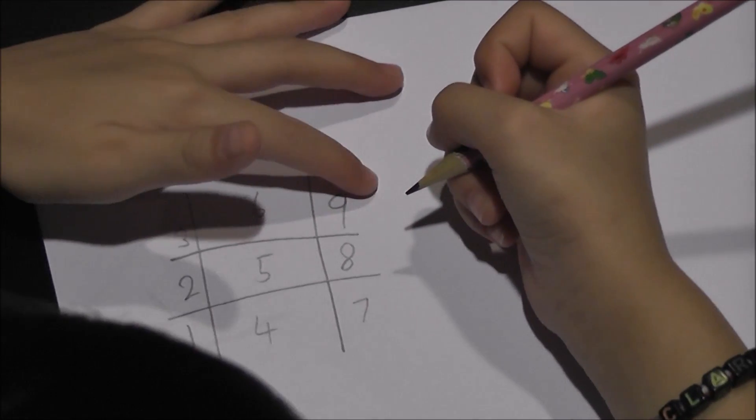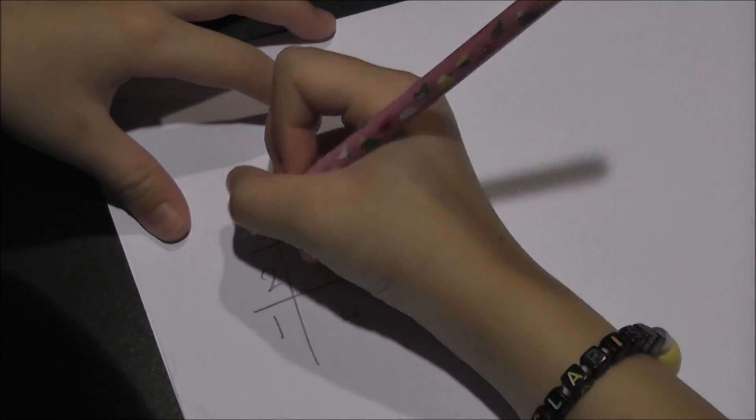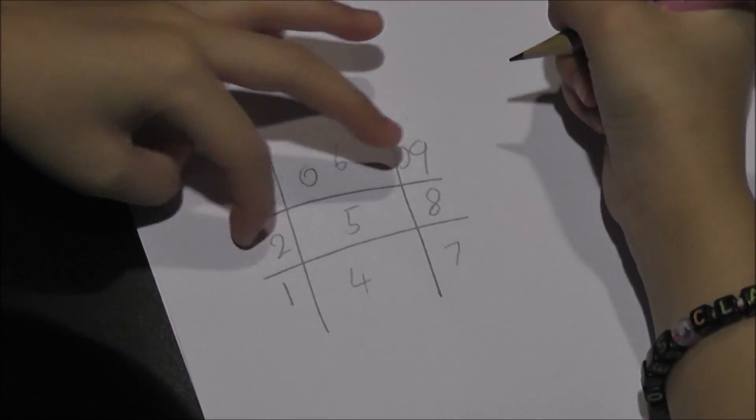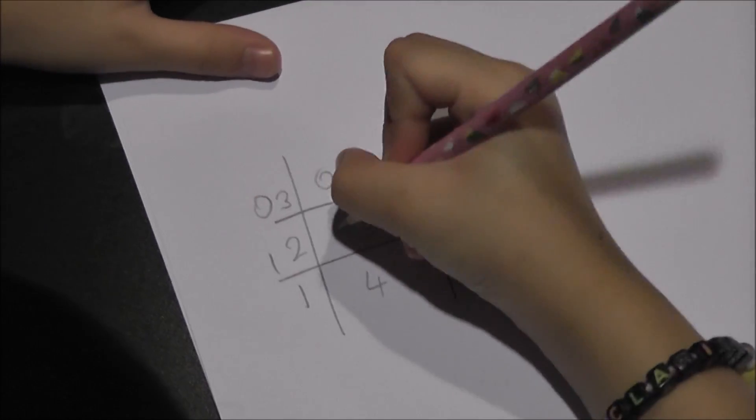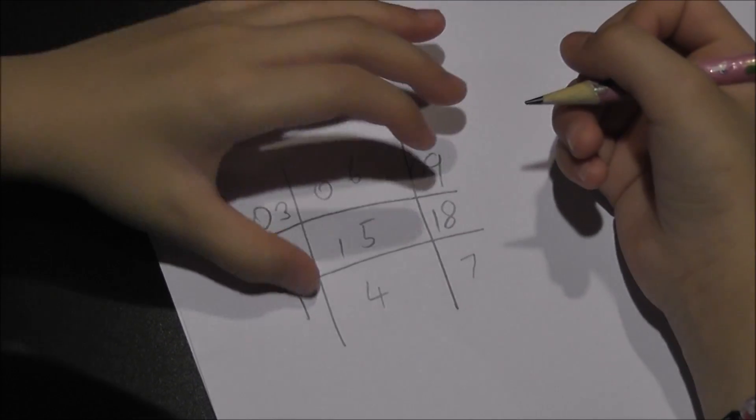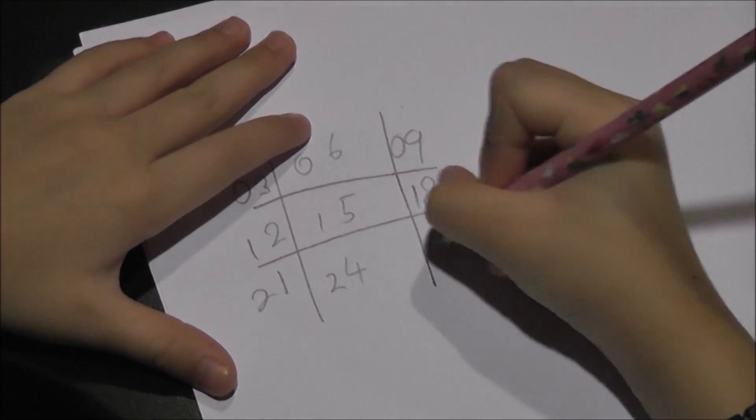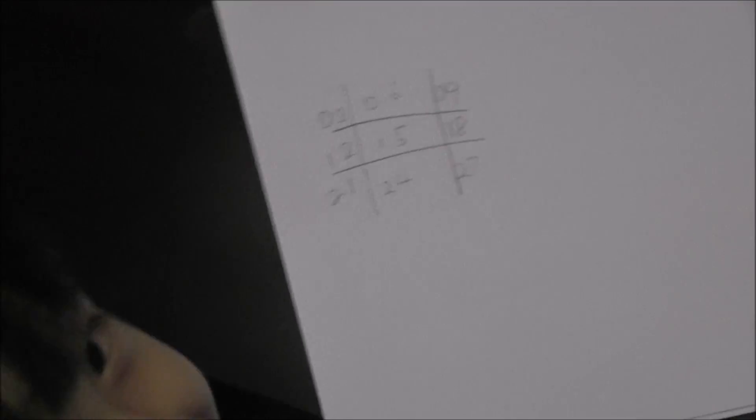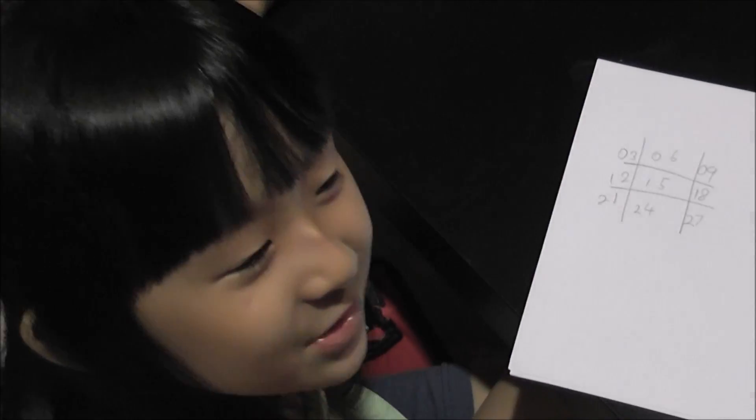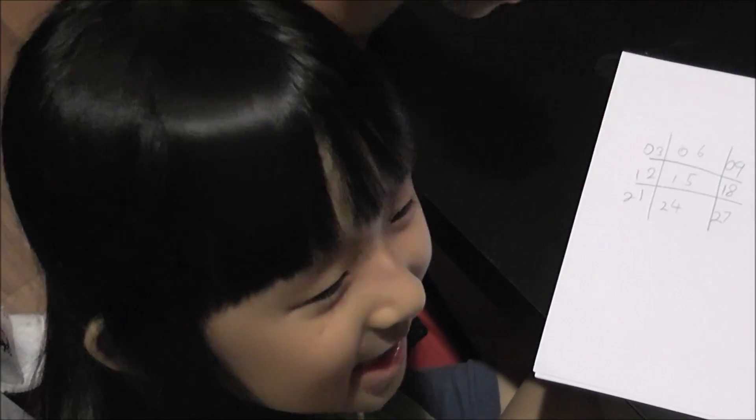For the multiplication of 3 for the first row, we will add 0. For the second row, we will add 1. For the third row, we will add a 2. Ta-da! This is how you make the 3 multiplication table.